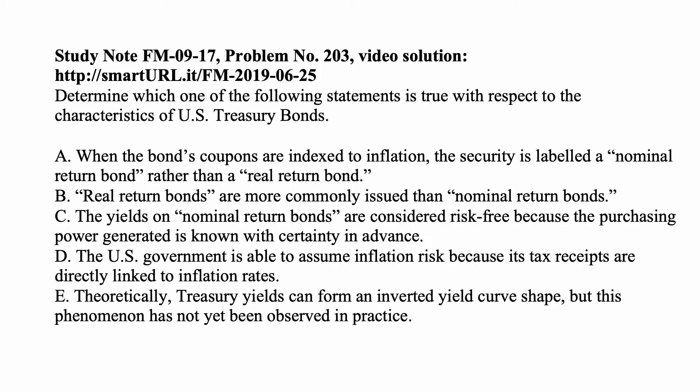Answer D: The U.S. government is able to assume inflation risk because its tax receipts are directly linked to inflation rates. This may be a slight exaggeration to say they're directly linked, but the required reading — the determinants of interest rates — says tax receipts are directly linked to inflation rates. Higher inflation brings higher tax receipts; lower inflation brings lower tax receipts. So D is true, and that is the answer.